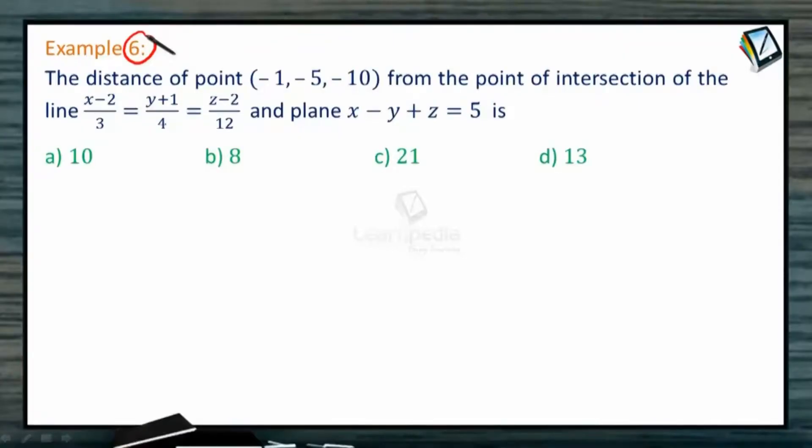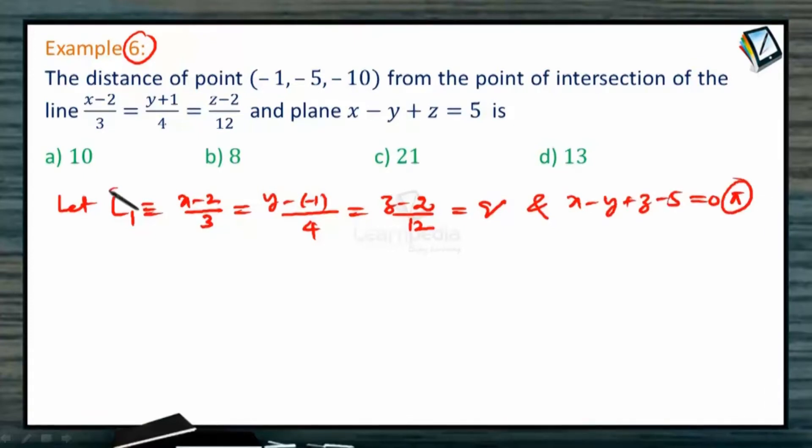The distance of the point from the point of intersection of the line and the plane. To find the point of intersection of the line and plane, let us take L1 as x minus 2 by 3 equals y minus minus 1 by 4 equals z minus 2 by 12 equals say some q, and plane is x minus y plus z minus 5 equals 0, say pi. This is L1.